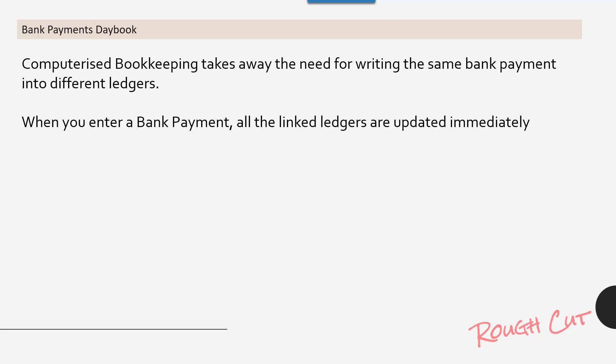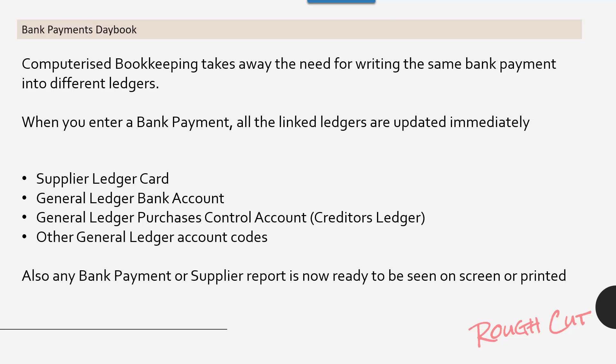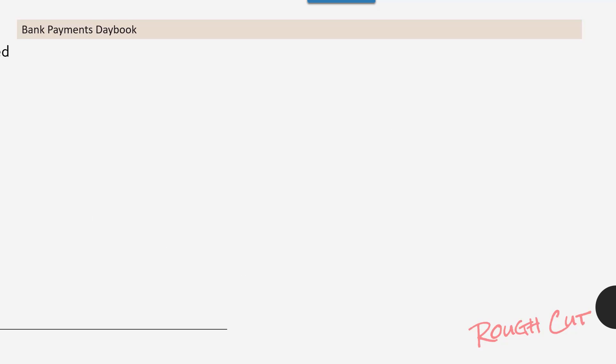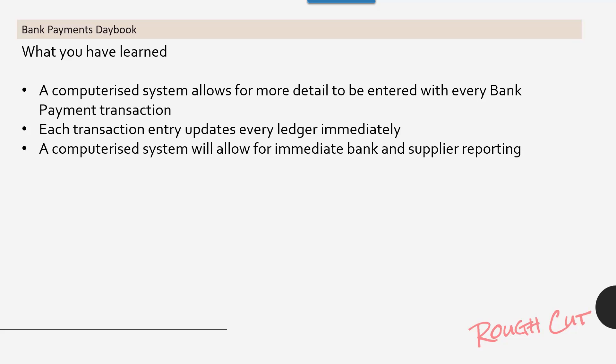When you enter a bank payment, all the linked ledgers are updated immediately: the supplier ledger card, the general ledger bank account, the general ledger purchases control account or creditors ledger, and other general ledger account codes. Any bank payment or supplier report is now ready to be seen on screen or printed. What you have learned: a computerized system allows for more detail with every bank payment transaction; each transaction entry updates every ledger immediately; and a computerized system allows for immediate bank and supplier reporting.